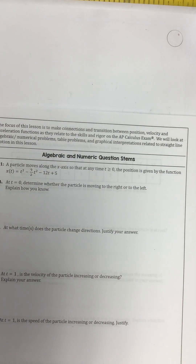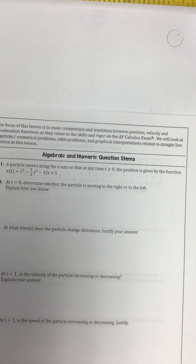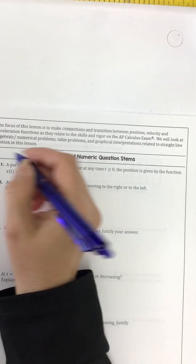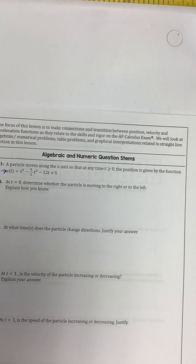The focus of this lesson is to make connections and transitions between position, velocity, and acceleration functions as they relate to the skills and rigor on the AP Calculus exam. We will look at algebraic, numerical, table, and graphical representations related to straight line motion. A particle moves along an x-axis so that at any time t greater than zero, the position is given by this function. At t equals zero, determine whether the particle is moving to the right or to the left.